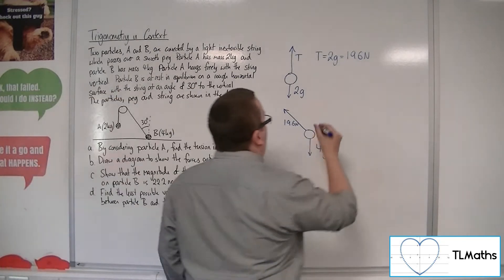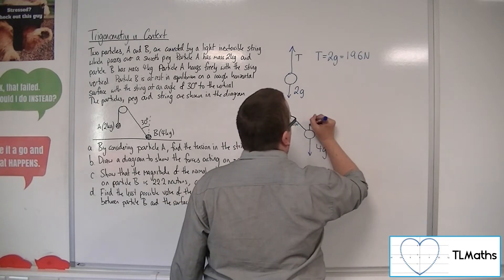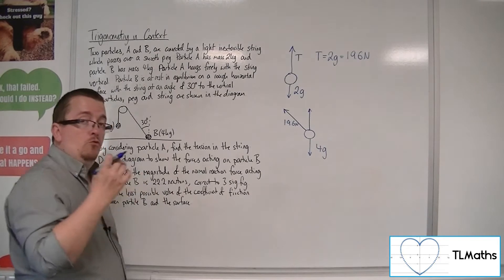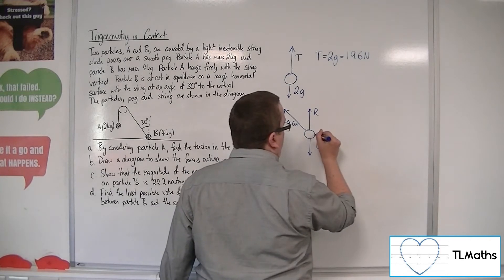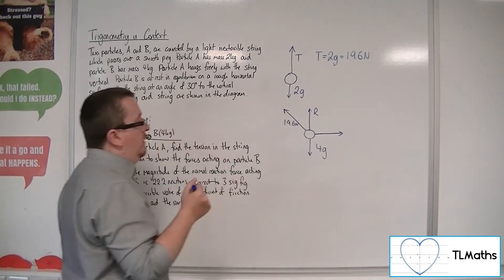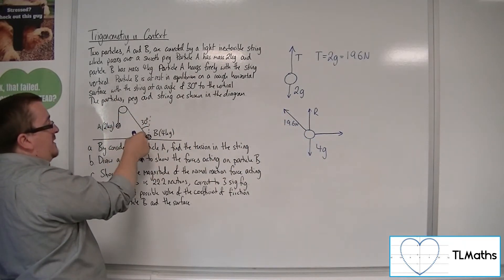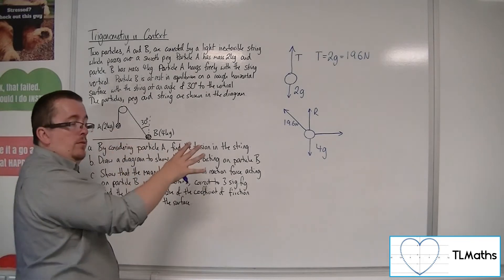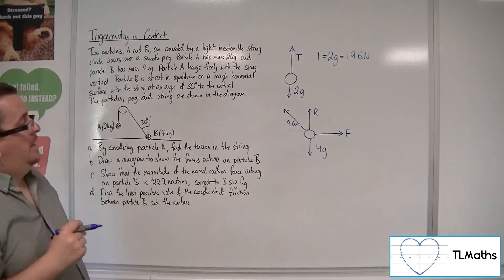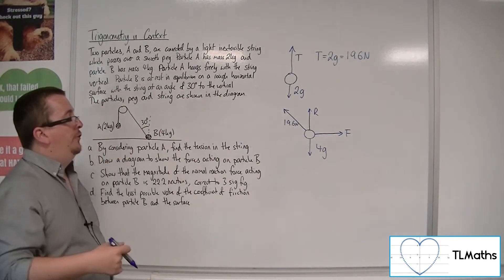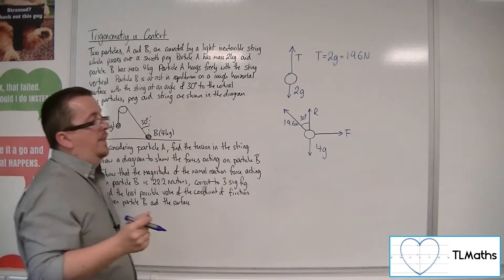Now we have, because we've got the 4g working downwards against the ground, we will have a normal reaction force. So we'll call that R. And because it's a rough ground, we will be expecting, because we've got the particle over here, effectively pulling against that string, the direction of the frictional force must be working in that direction. And so this would be a diagram to show those forces. Now we could put in 30 degrees there if we like, but that's really what we needed.